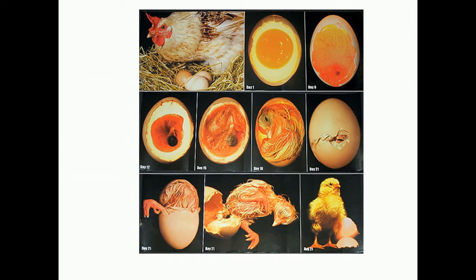The embryo is just a tiny blob inside the yolk which later develops into a fully grown chick in 21 days. In the first 72 hours of the incubation period, the embryo starts to appear as a red blob. At 5 days of incubation, the embryo becomes clearer. At 7 days, large eyes start to develop. At around 10 days of incubation, the wings, legs, and body are formed.